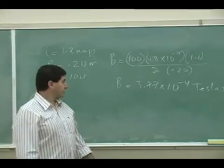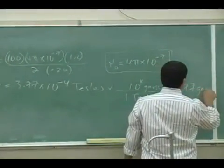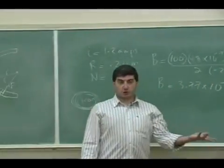So it's 3.77 Gauss. That's the magnetic field strength of a coil of 100 turns with 1.2 amps and 20 centimeter radius.